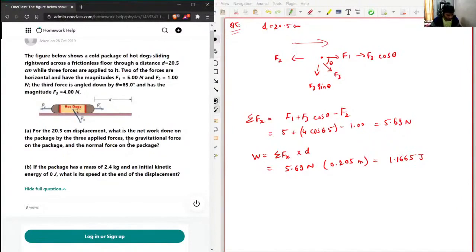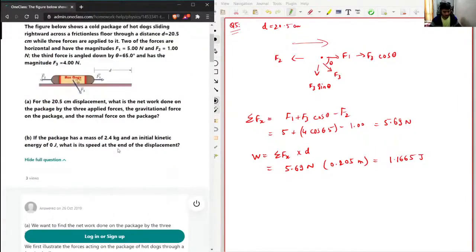Work done by the three applied forces, the gravitational force on the package, and the normal force on the package. They haven't calculated what is the net work done on the package by the three applied forces, the gravitational force on the package, and the normal force on the package. So the thing is that the gravitational force is going to be in downward direction which will be mg, and the normal force is going to be obviously in the upper direction. So the thing is that the displacement is in positive x direction.